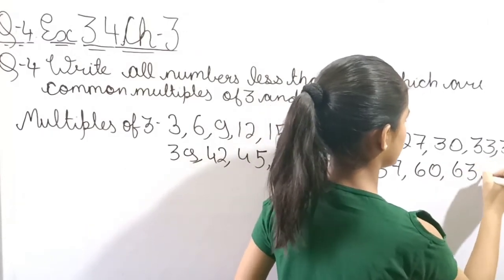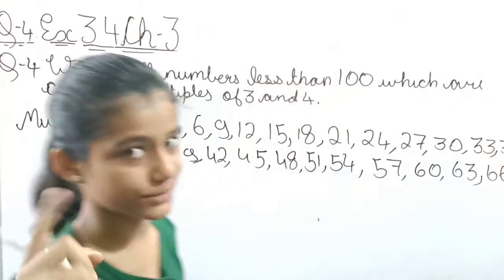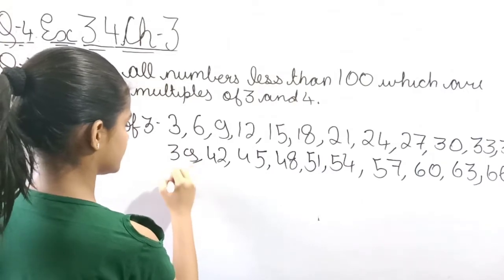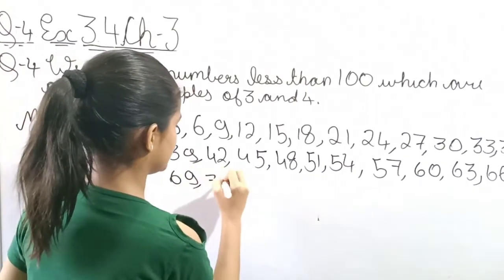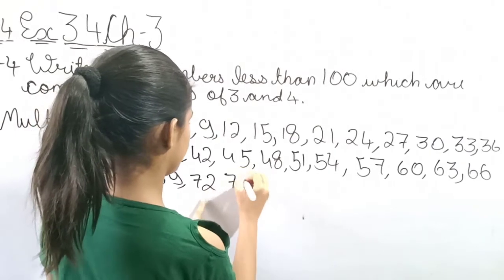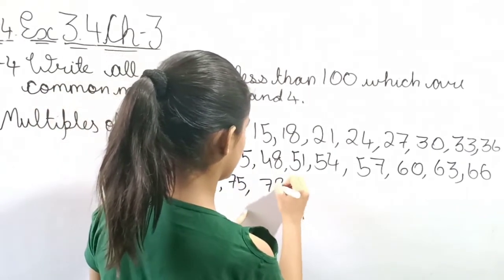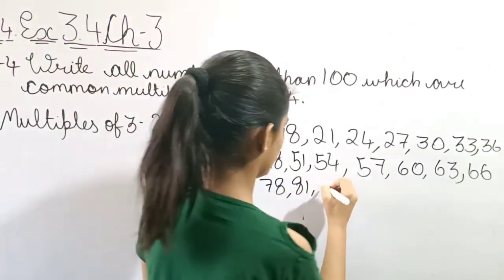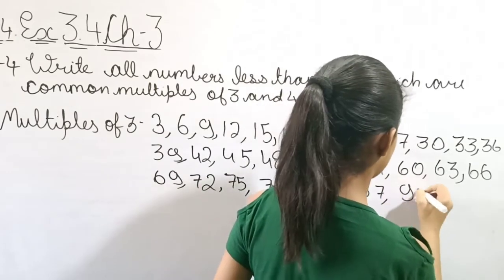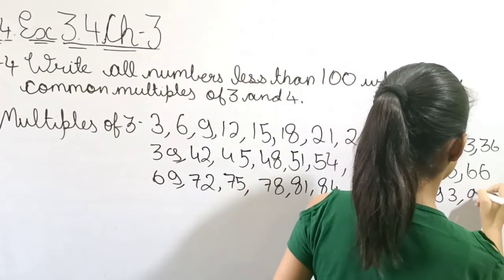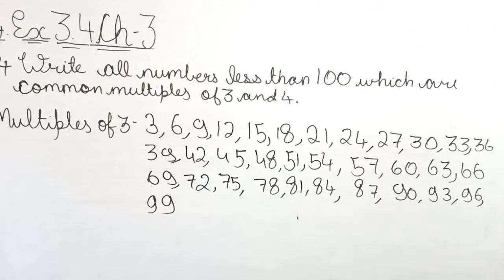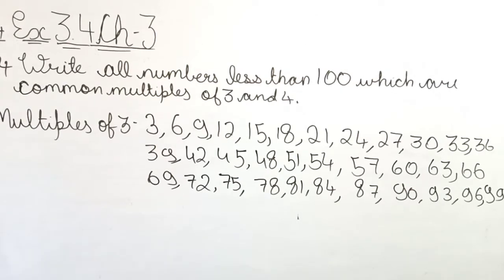63, 66, 69, 72, then 75, 78, 81, 84, 87, 90, 93, 96, 99. This is our table of 3.